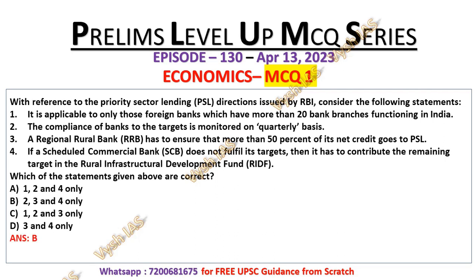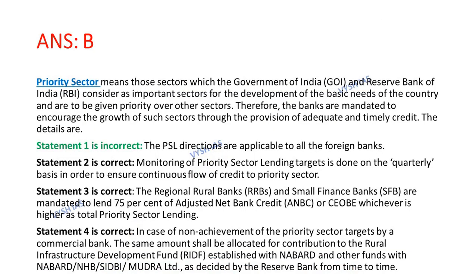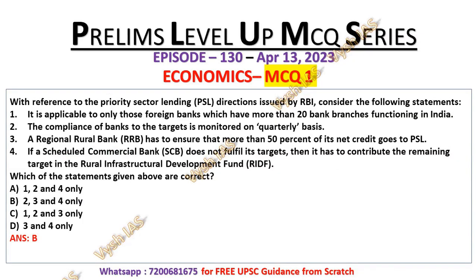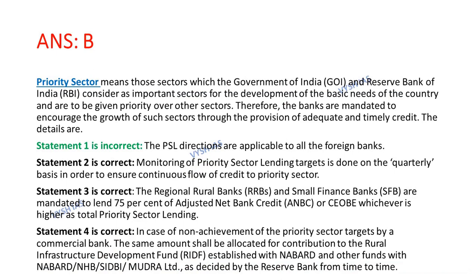The answer is option B, which means statements 2, 3 and 4 are correct. Now let's look at the explanation. Priority sector are basically those sectors which the Government of India and Reserve Bank of India consider as important sectors for the development of basic needs of the country, to be given priority over other sectors. Statement 1 is incorrect because PSL directions are applicable to all foreign banks — not only those with more than 20 bank branches functioning in India.